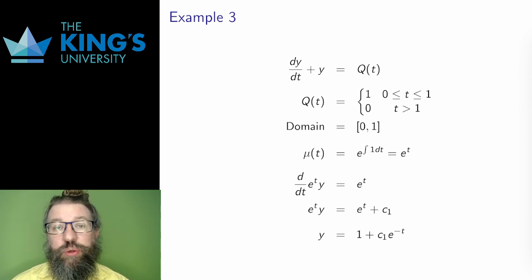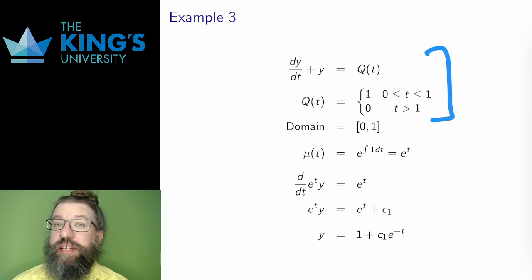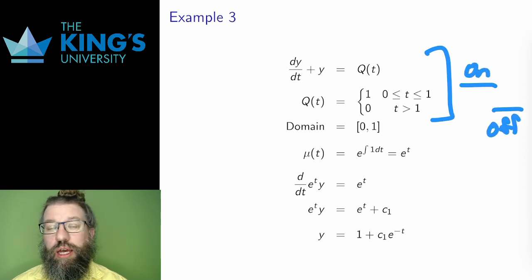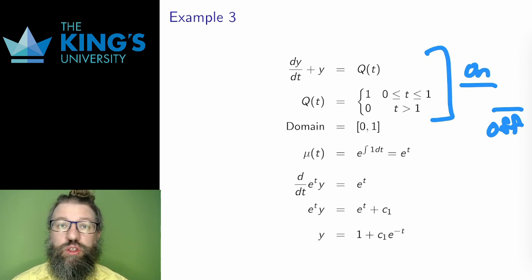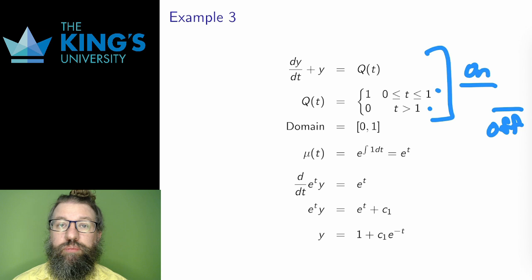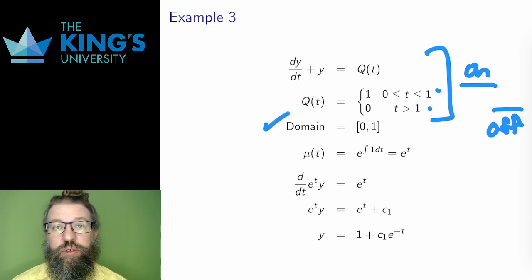One more example, and this one has a twist: Q is a piecewise function. It's really common to have piecewise switch functions like this — something is on, and then after one unit of time it turns off. There are lots of things in applied mathematics that behave this way. I'm going to have to deal with this in two cases: one for t between 0 and 1, and one for t greater than 1.